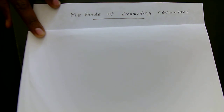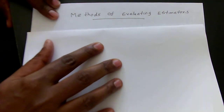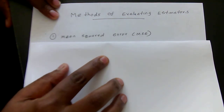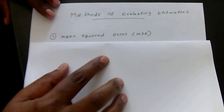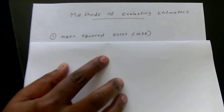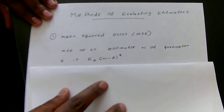In this video we will discuss one method of evaluating estimators. The method we are going to discuss is called the mean squared error, or MSE. This is the first and usually the simplest method that we can use to evaluate an estimator. Let's discuss the definition of mean squared error.